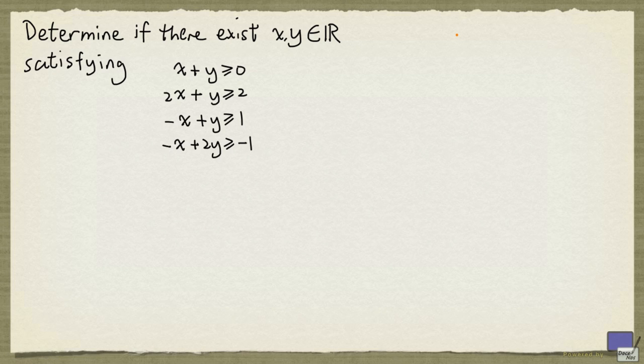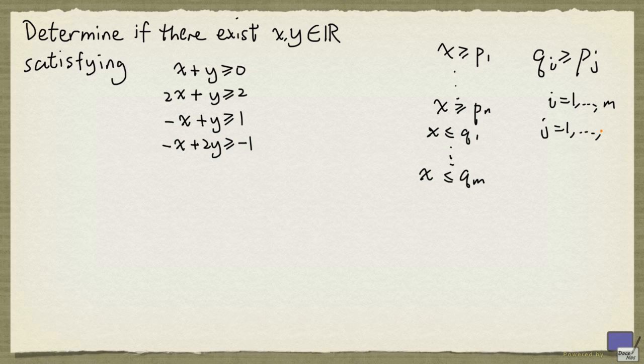Notice that if we have a system of inequalities that involve one variable, say something that looks like this, then it's easy to determine if there is an x satisfying all these inequalities. We just need to make sure that the smallest of these upper bounds is at least the largest of these lower bounds. In other words, we need to have qi at least pj for all i from 1 up to m, and for all j from 1 up to n.